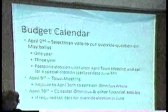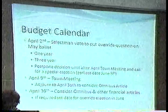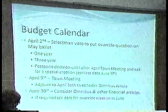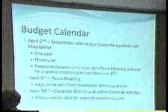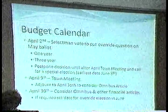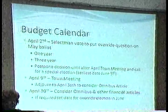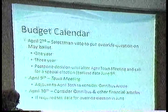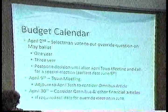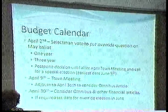We've heard about the governor's budget, but there's still some contention and concern. The finance team met with Representative Brad Jones a couple of weeks ago. His recommendation was that we wait until April 30th. He led us to believe we could be comfortable with the governor's budget number, but there may be some more money out there. On April 30th, we will consider the omnibus article and other financial articles — there are about four or five on the warrant. If required, we'll set a date for an override election in June.